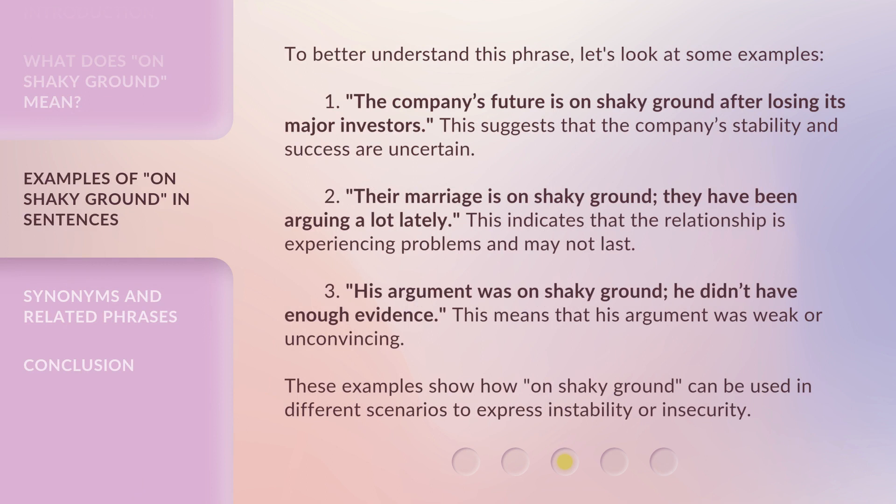To better understand this phrase, let's look at some examples. One: the company's future is on shaky ground after losing its major investors — this suggests that the company's stability and success are uncertain. Two: their marriage is on shaky ground; they have been arguing a lot lately — this indicates the relationship is experiencing problems and may not last. Three: his argument was on shaky ground; he didn't have enough evidence — this means his argument was weak or unconvincing. These examples show how 'On Shaky Ground' can be used in different scenarios to express instability or insecurity.